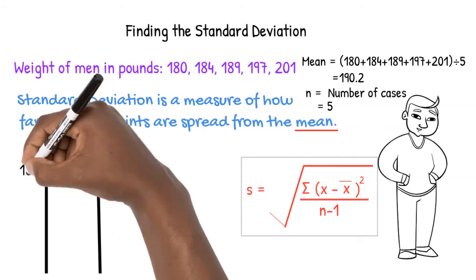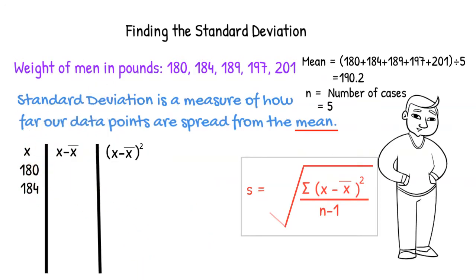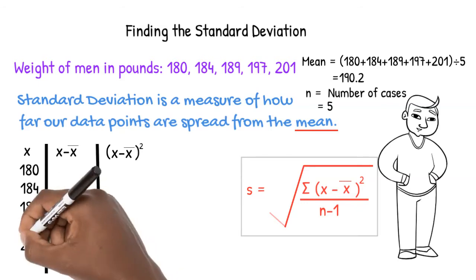The weights of the men are 180 pounds, 184 pounds, 189 pounds, 197 pounds, and 201 pounds.